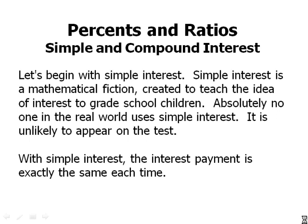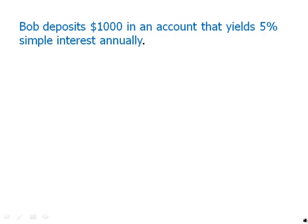Bob deposits $1,000 in an account that yields 5% simple interest compounding annually. 5% of $1,000 is $50. So what this really means is that every year, Bob is going to get another $50 worth of interest.